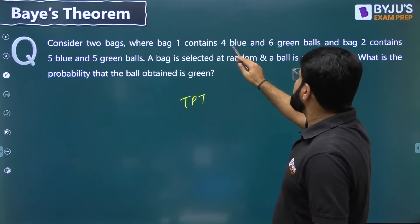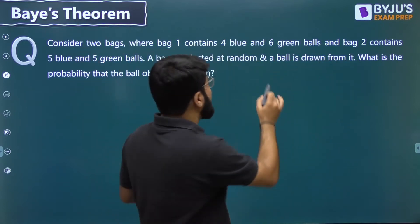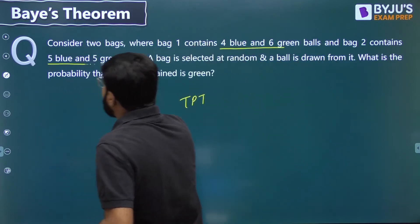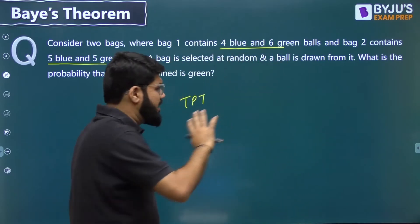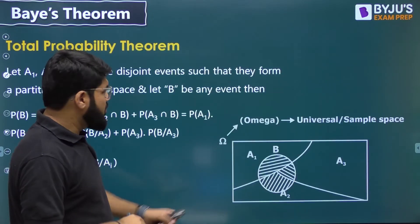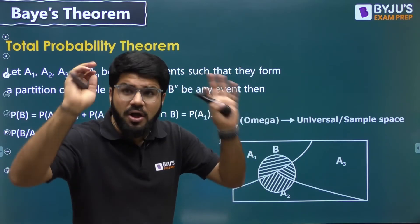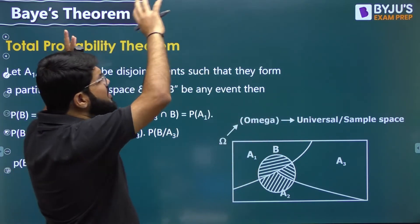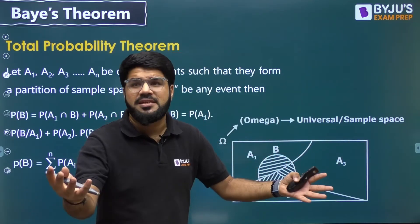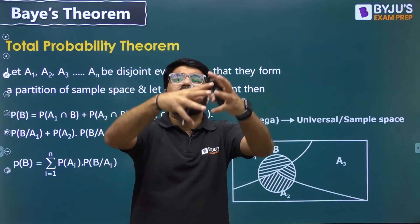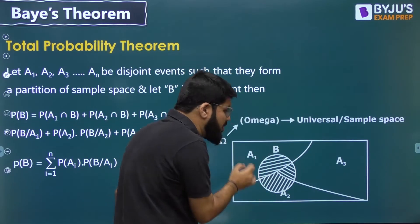Consider two bags: bag one contains four blue and six green balls, and bag two contains five blue and five green balls. There are a total of 20 balls — 10 in each bag — but they are not collectively available together; they are partitioned into two bags. This is a story of partitioned sample space. Here I've shown an example with three partitions. Suppose there is a sample space partitioned into three different events that are disjoint and mutually exclusive — they don't have anything in common, like bag one is separate from bag two.